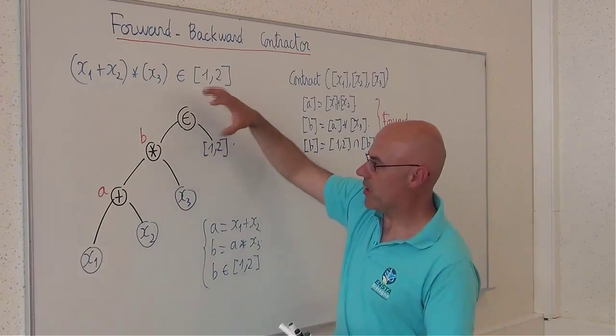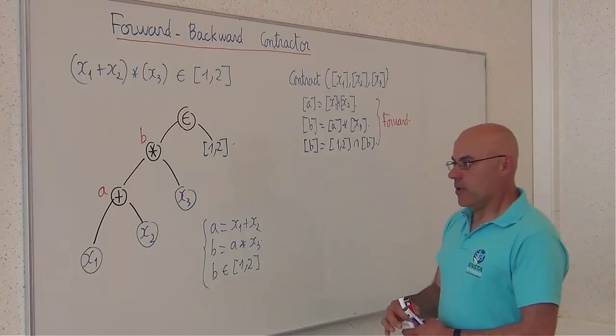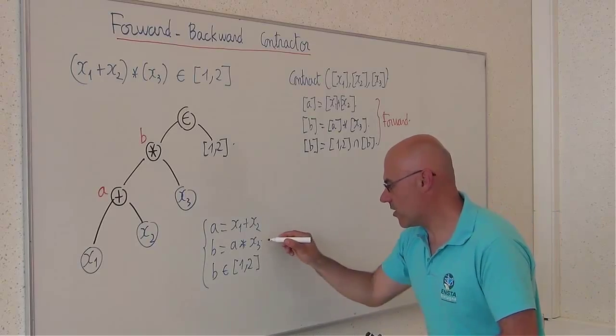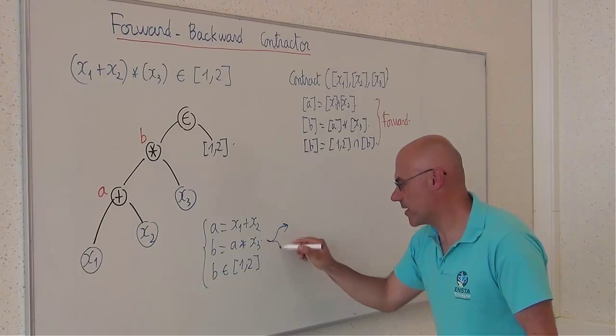Now, I will go from the root to the leaf. To do this, I will, of course, isolate a and x3 here.